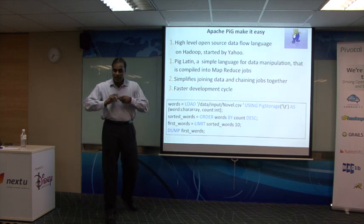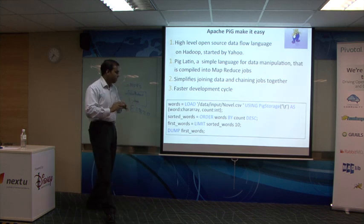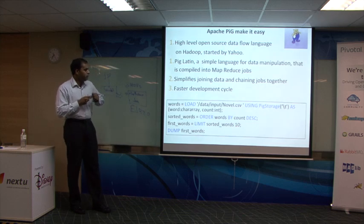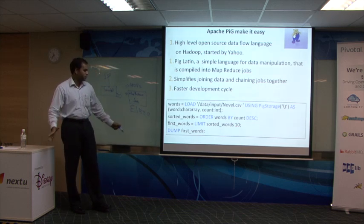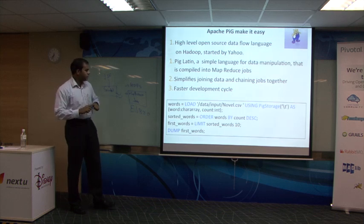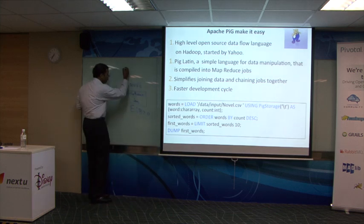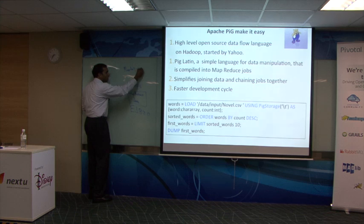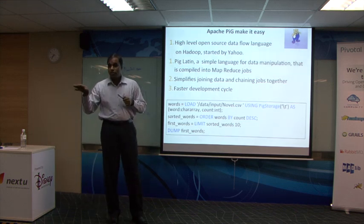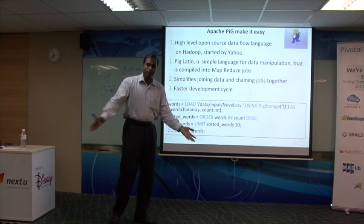The faster development life cycle is one of PIG's key benefits — the amount of time you spend to build productive code is significantly less. For example, if you want to count the number of words in a one-terabyte file, don't worry about installing PIG yourself. You can download a virtual machine from Pivotal, Hortonworks, or Cloudera — they all have VMs with all components pre-installed. Don't waste time downloading and installing everything manually.